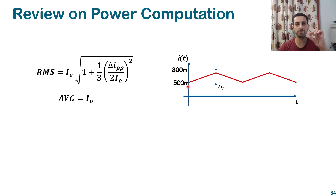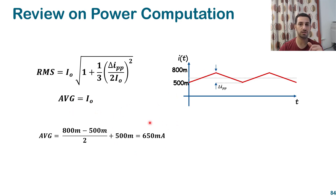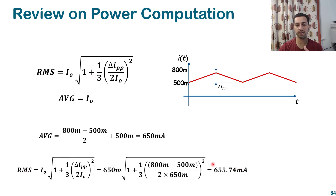We assume the signal stands on a DC offset of 500mA. So the average value is: (800mA − 500mA) / 2 + 500mA = 650mA. You can use integration for a different signal, but this simple rule works here. Using the average value and the peak-to-peak difference (800 − 500mA) in the RMS formula, we should get 655.74mA. Please recalculate that with your calculator to verify.